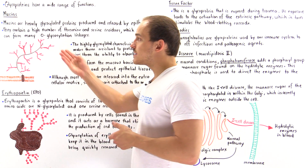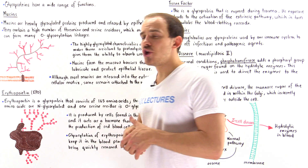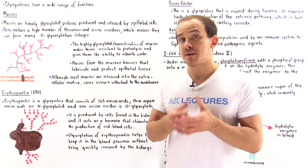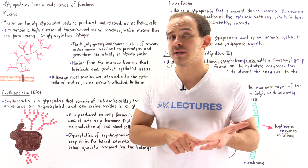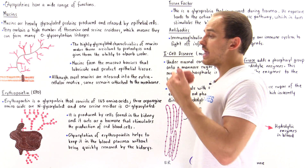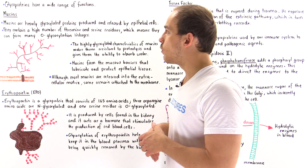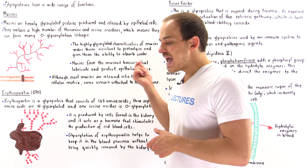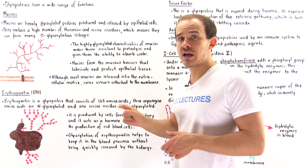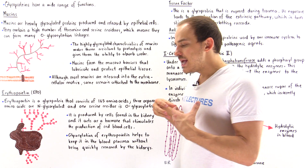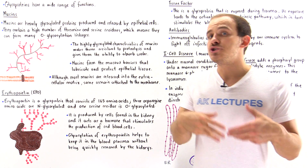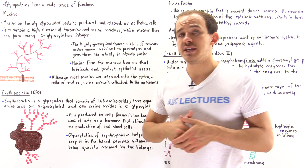Let's begin by discussing a category of glycoproteins known as mucins. Mucins are the major constituents — the major components — of the mucous membranes that exist inside our body. The mucous membranes can be found in the nasal cavity, in our air passageways, the bronchioles and so forth. Mucins are heavily glycosylated proteins produced and released by the epithelial cells of our body. Heavily glycosylated means there are many oligosaccharides — many sugar molecules — found attached onto these proteins.